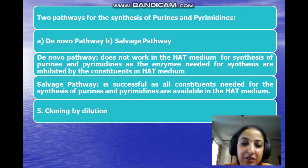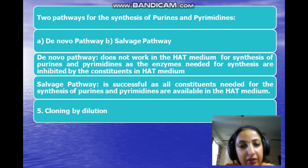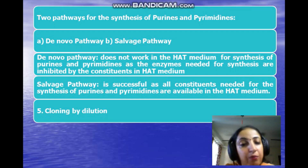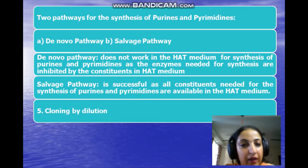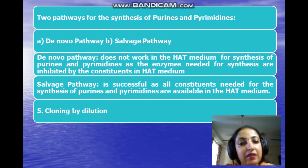The salvage pathway is based on the principle of recycling: whenever DNA and RNA in our body break down, purines and pyrimidines are broken up and regenerated by recycling. In the salvage pathway, two chemical constituents are used — hypoxanthine and thymidine — both of which are present in the HAT medium. Hypoxanthine is responsible for forming the purine inosinate, and thymidine is responsible for producing the pyrimidine orotate. Inosinate and orotate are the precursors for purine and pyrimidine respectively, and B cells are successfully produced because they grow by the salvage pathway.